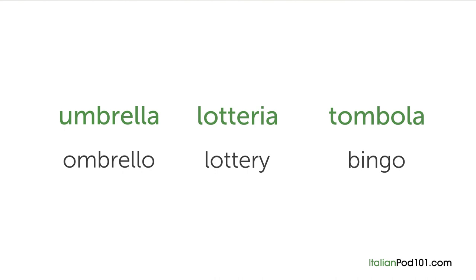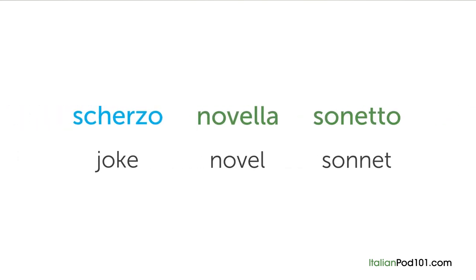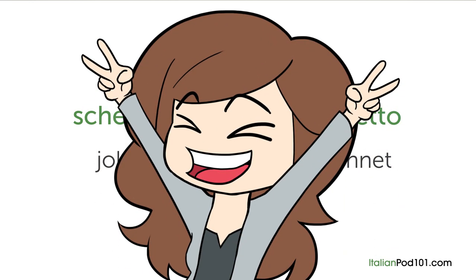The list doesn't end there. Umbrella comes from the Italian 'ombrello,' lottery comes from 'lotteria,' and tombola is also an Italian game. Madonna, monsignor, and padre are all loanwords related to religion. 'Scherzo' in Italian means joke, and 'novel' comes from the Italian 'novella.' Sonnet comes from 'sonetto.' Italian is everywhere.